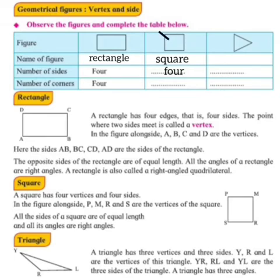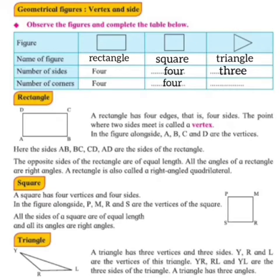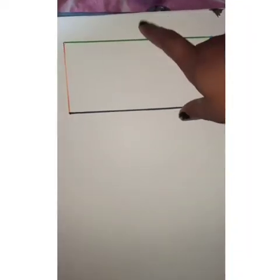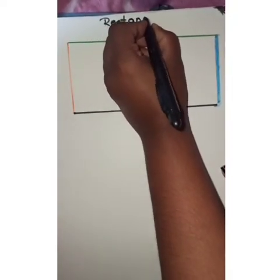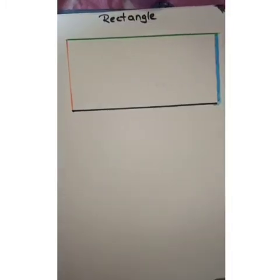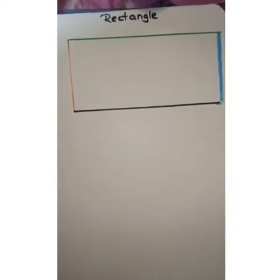How many corners does the square have? One, two, three, four — again four. The third figure is a triangle. How many sides? One, two, three. And how many corners? One, two, three. Now children, look at this rectangle here. How many sides or edges does a rectangle have? Four — that is one, two, three, four.